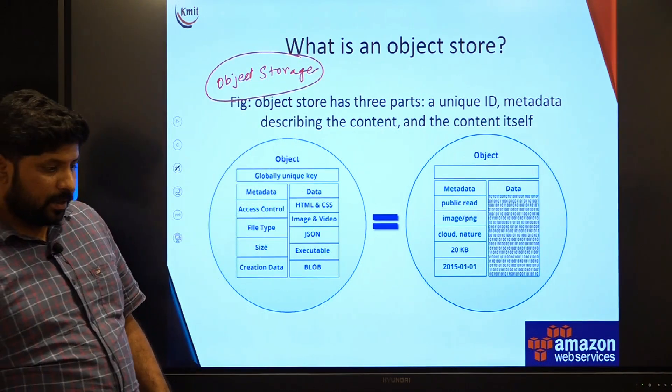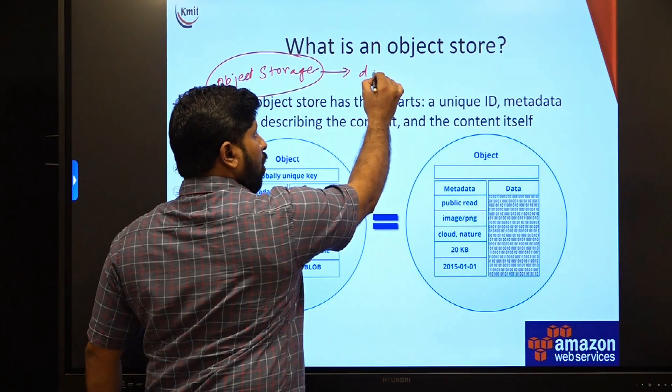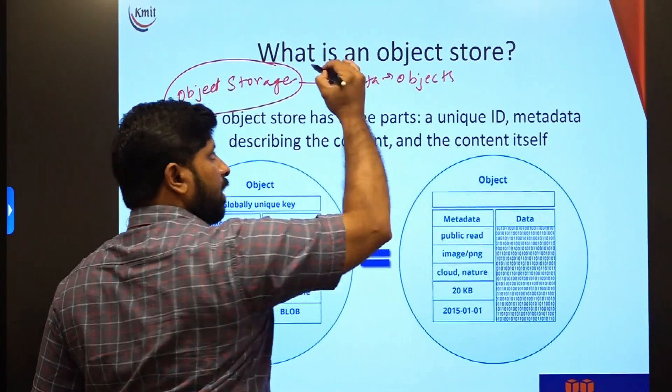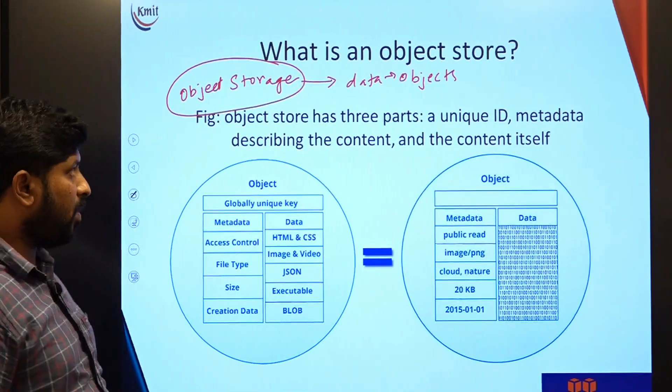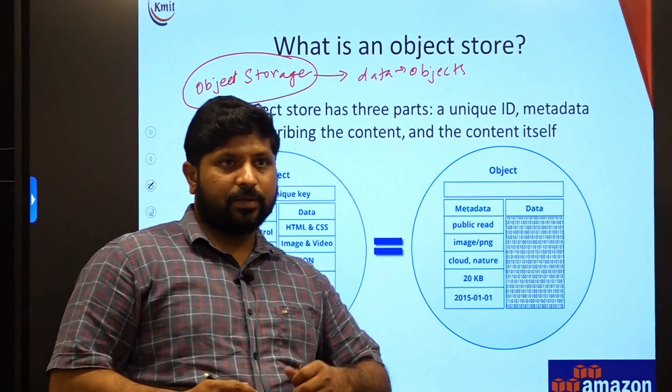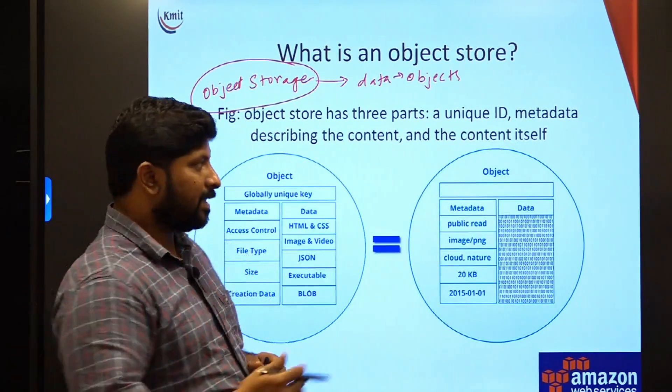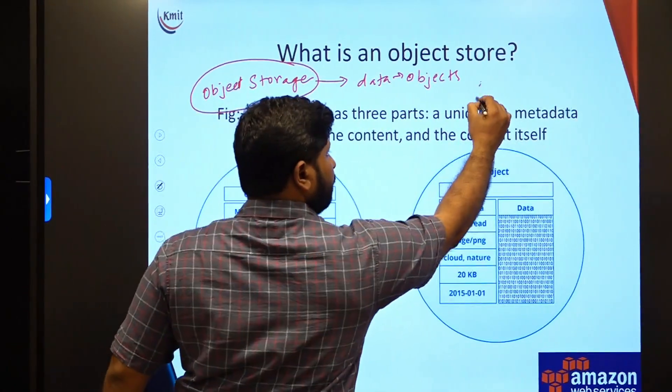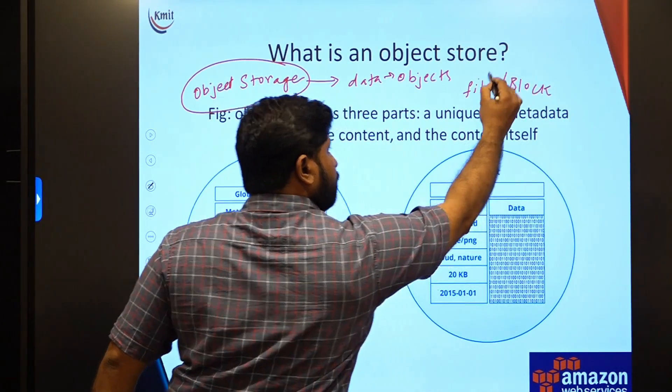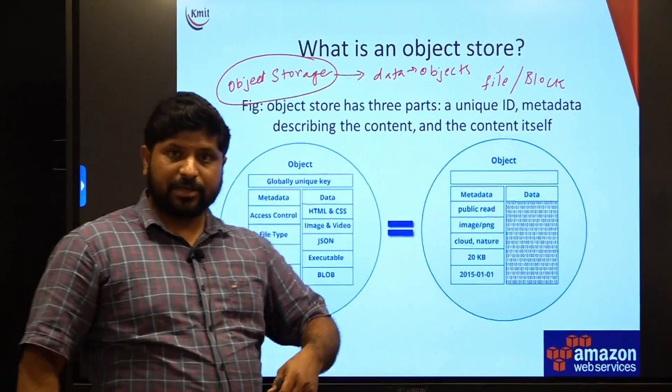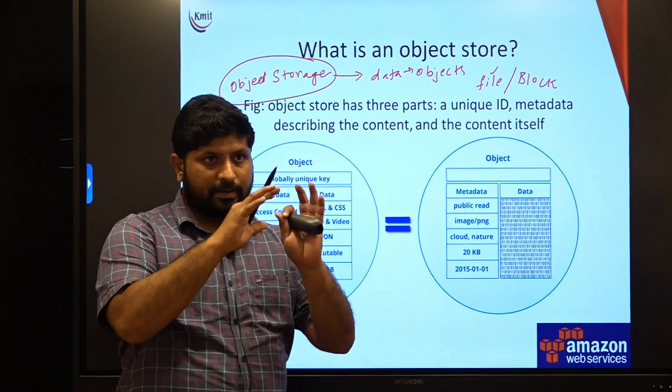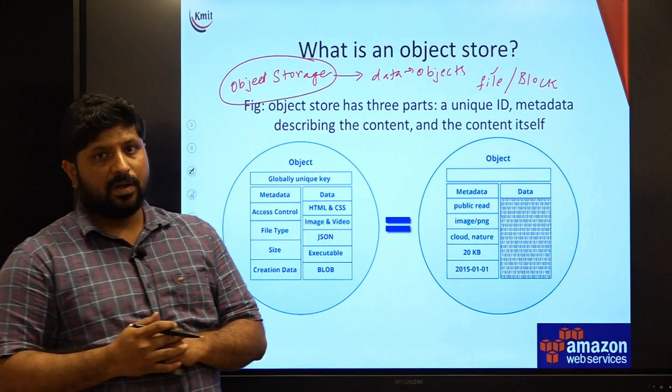What happens here is the data is being organized in the form of objects. The data will be organized and stored in the form of objects, which is very different when we are comparing this with other storage mechanisms such as file storage or block storage. File storage follows the hierarchy structure where folders and files are maintained and the entire data is represented in the form of a file.